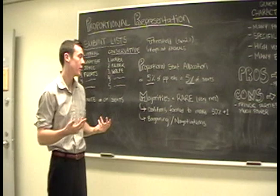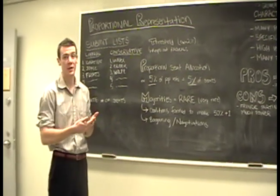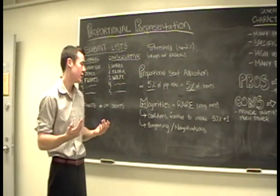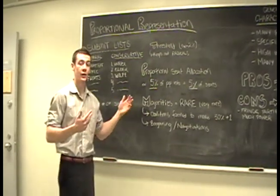A coalition is a number of parties coming together to form 50% plus 1 of the number of seats in the House. The way they do this is through bargaining and negotiations.